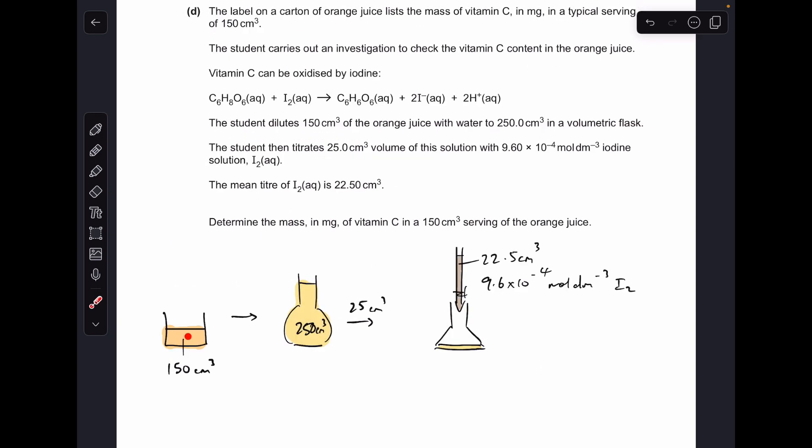Finally, the titration. I've got one of my trusty diagrams to help visualize what's happening in the experiment. The original orange juice is here, slightly darker orange colour, 150 cm³, obviously the vitamin C is in there.